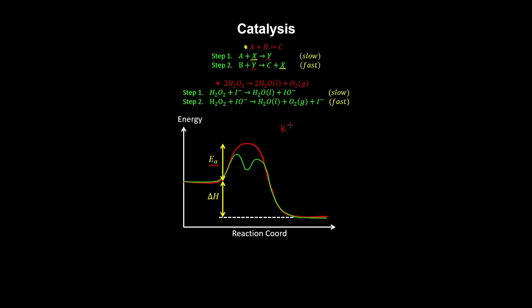Adding potassium iodide to a solution of hydrogen peroxide accelerates the reaction. The iodide catalyst is consumed to increase the rate of reaction of the slow step and regenerated in a subsequent step. Hypoiodide is the intermediate that's produced in the slow step.